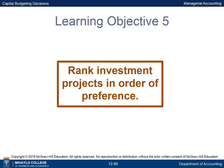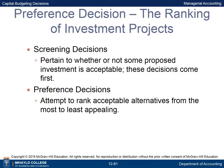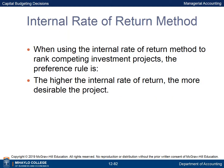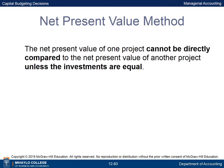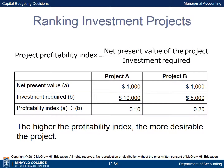Learning Objective 5 is to rank investment projects in order of preference. Screening decisions — whether a proposed investment is acceptable — come first. Preference decisions rank acceptable alternatives from most to least appealing. When using the IRR method, the higher the IRR, the more desirable the project. The NPV of one project cannot be directly compared to another unless investments are equal. The Project Profitability Index equals NPV divided by investment required. The profitability indexes for Investments A and B are 0.10 and 0.20 respectively; the higher the index, the more desirable the project.